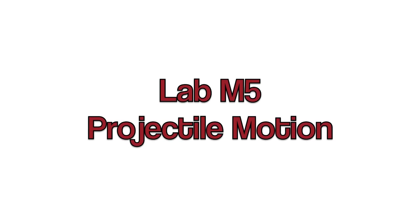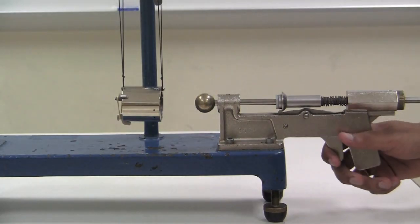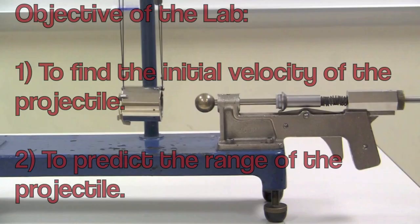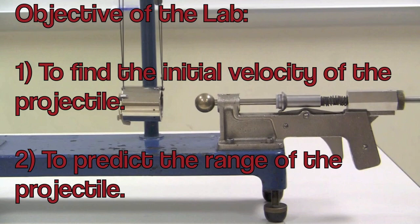Welcome to lab M5, projectile motion. The objectives of this lab are to find the initial velocity of a projectile and then to predict the range of the projectile.